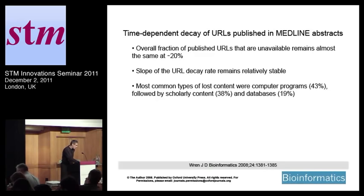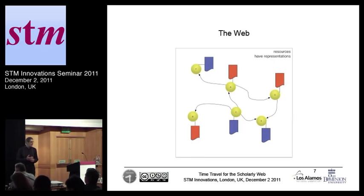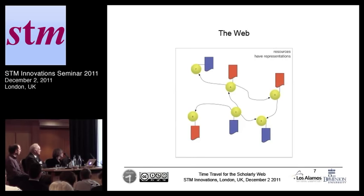These kind of studies only tell you part of the problem. The one that I'm going to introduce I refer to as the current representation problem, and it's related to the fact that the web exists in the eternal now. So this is the web, and these are resources on the web with their URIs, and resources have representations. You dereference a URI, you get something back.